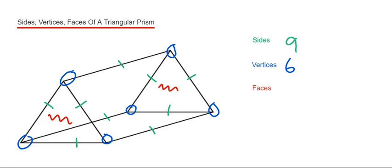And then we've got our rectangles around the middle. So we've got 1 at the bottom which is 3, and then we've got the 2 sloping ones, 4 and 5. So we've got 5 faces.